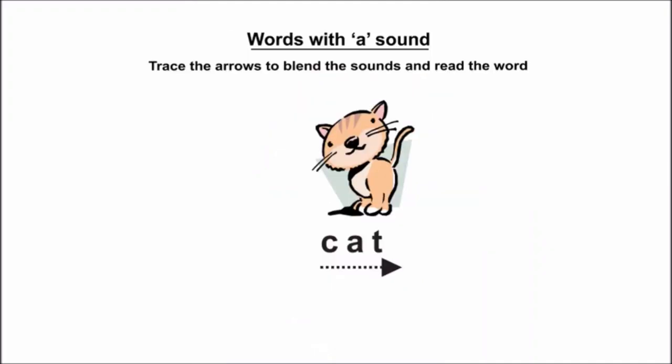What is the first sound? Correct. C is the first sound. So one dot for C, one dot for A, and one dot for T. Now let us join all the sounds to read the word. C, A, T, Cat. Let us read one more time. C, A, T, Cat. There are three dots for three sounds.